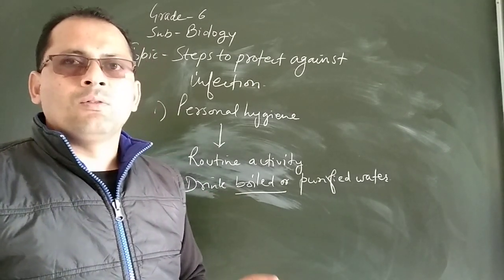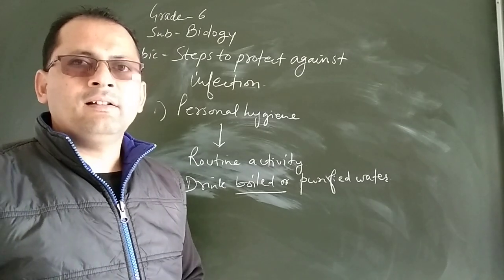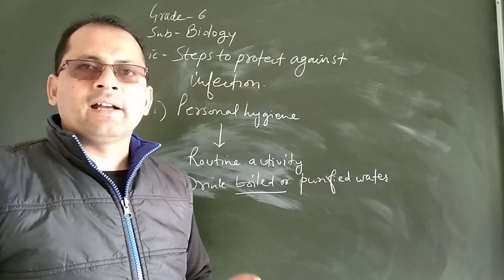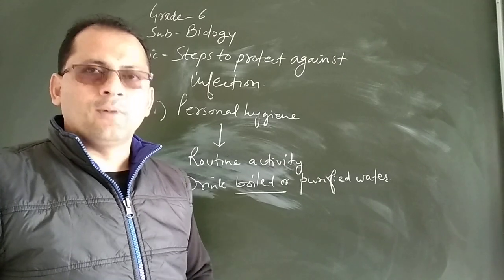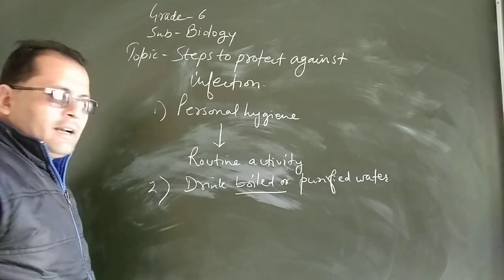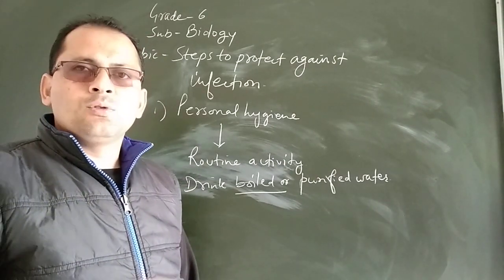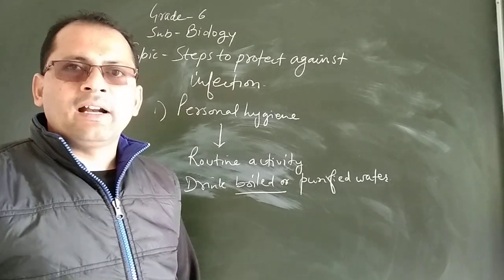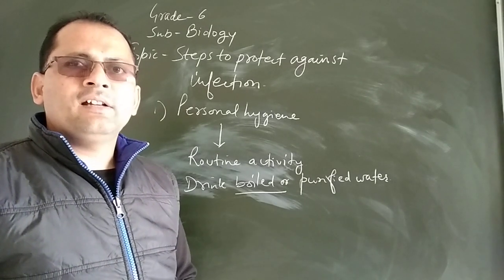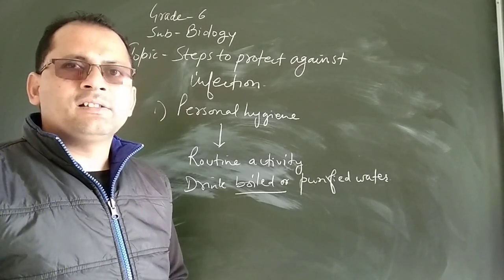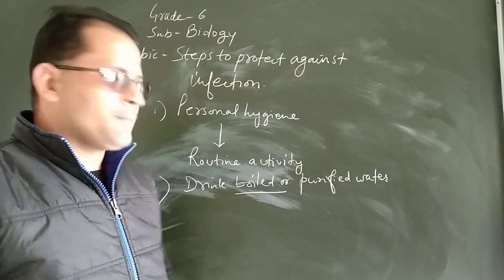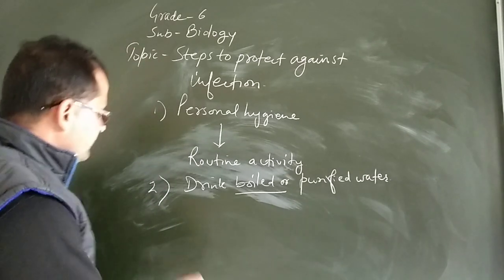During rain, rainwater gets mixed with waste or excreta of humans as well as animals. This excreta then moves to water bodies, contaminating them and causing many diseases in animals as well as humans.